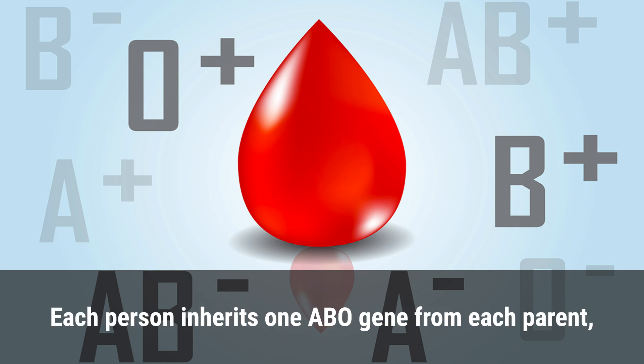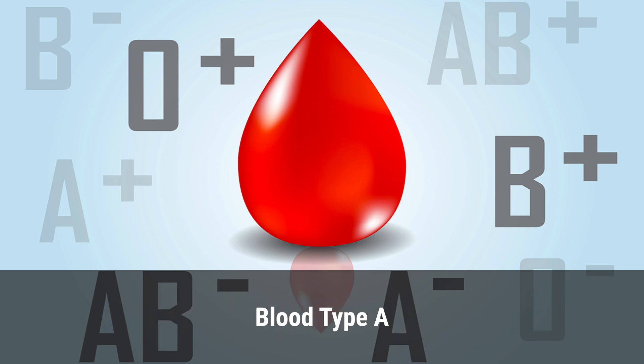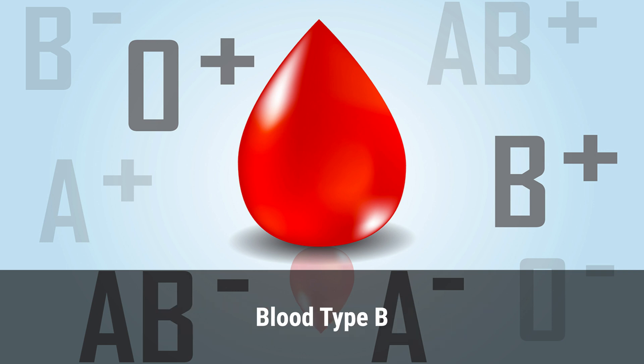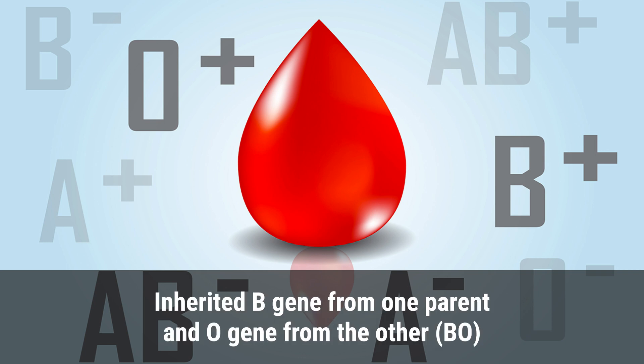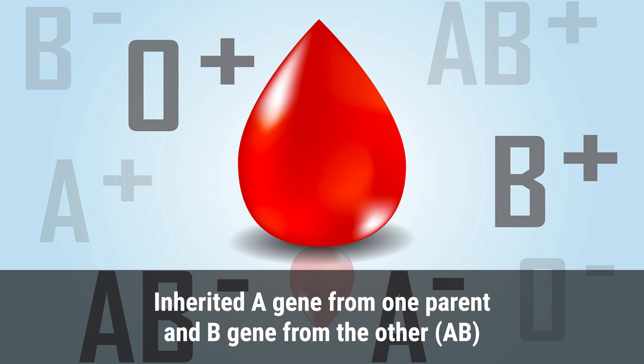Each person inherits one ABO gene from each parent, resulting in various possible combinations that dictate blood type. Blood type A is inherited with an A gene from one parent and an O gene from the other (AO). Blood type B is inherited with a B gene from one parent and an O gene from the other (BO).